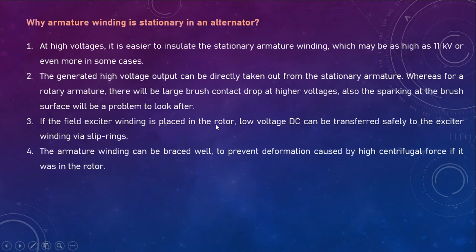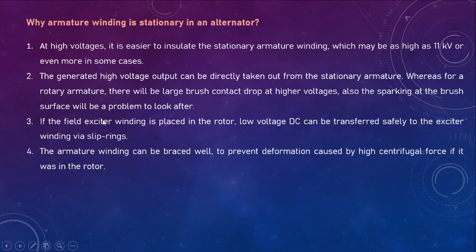If the field exciter winding is placed in the rotor, low voltage DC can be transferred safely to the exciter winding via slip rings. Since field windings are placed in the rotor side and are rotating, low voltage DC supply can be fed to excite the rotor without any problem.